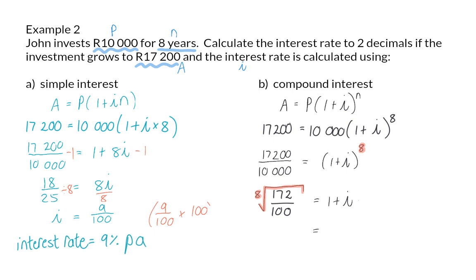And finally to solve I I am going to subtract 1 on both sides and that will give me 0.0701. And again to get the interest rate I am going to multiply by 100 and this will give me 7.01% per annum.